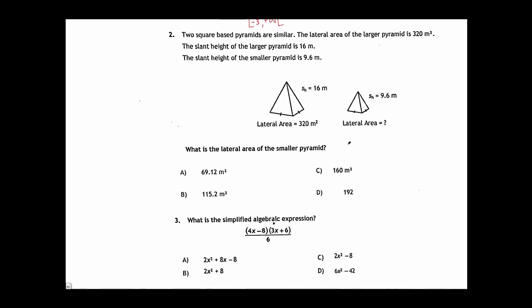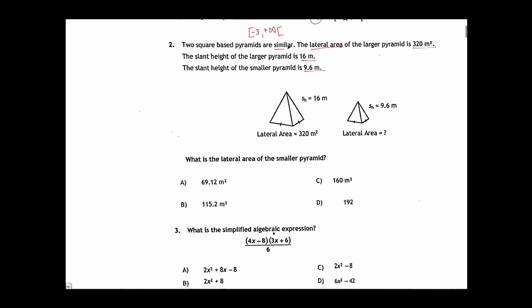Problem 2: Two square-based pyramids are similar. The lateral area of the larger pyramid is 320 meters squared. The slant height of the larger pyramid is 16 meters. The slant height of the smaller pyramid is 9.6 meters. What is the lateral area of the smaller pyramid? The key thing here is that these two pyramids are similar, which means we'll be able to use our similarity constants k, k-squared, or k-cubed.